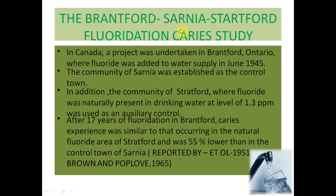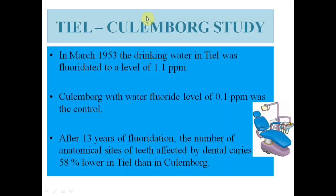The Brantford–Sarnia–Stratford study was conducted in Canada. It started in 1945; Brantford was the intervention city and Sarnia along with Stratford were kept as controls. After 17 years of fluoridation, Brantford reported 55 percent reduction in caries compared to controls. The Tiel–Culemborg study started in 1953; Tiel was fluoridated and Culemborg was kept as the control. After 13 years, there was a 58 percent reduction in the intervention city.